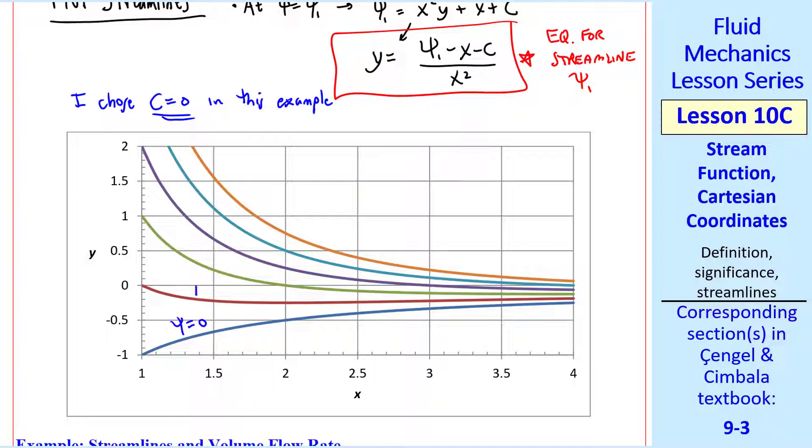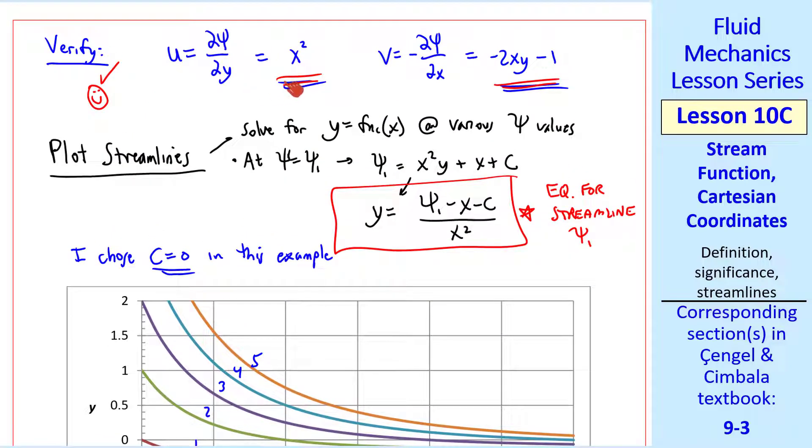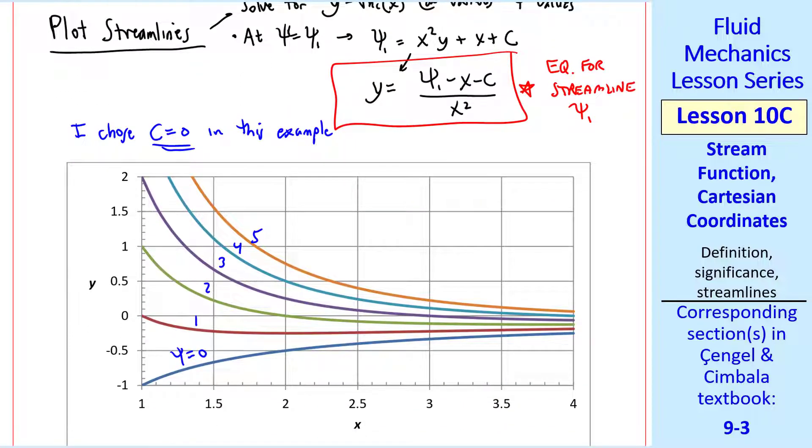Psi equals 0, 1, 2, 3, 4 and 5. How do we know the direction of the flow? Well we look at our velocity field and we see that for positive x, u is positive which means the flow must be going from left to right. So I put some arrowheads on these streamlines.